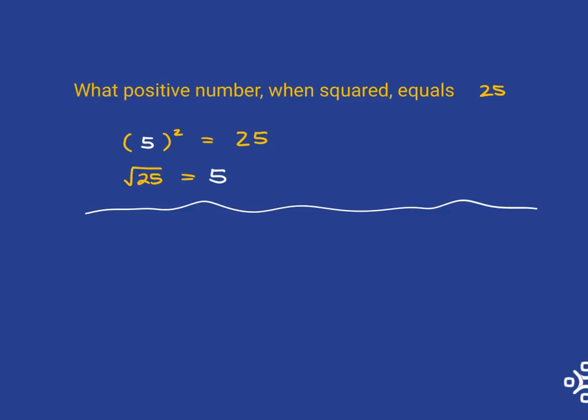So if we start at the other end, for example, we ask what's the square root of 49? What we're asking is what positive number when squared will give me 49 as the answer. And that should easily be known to you as 7. And so the square root of 49 is 7.